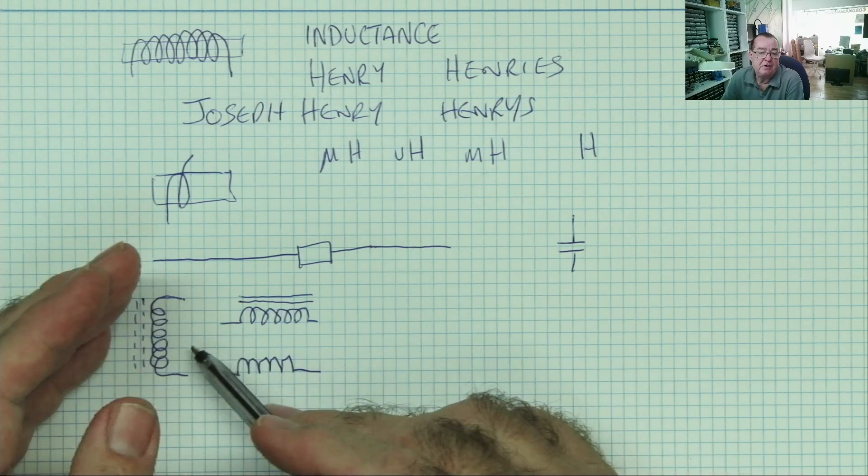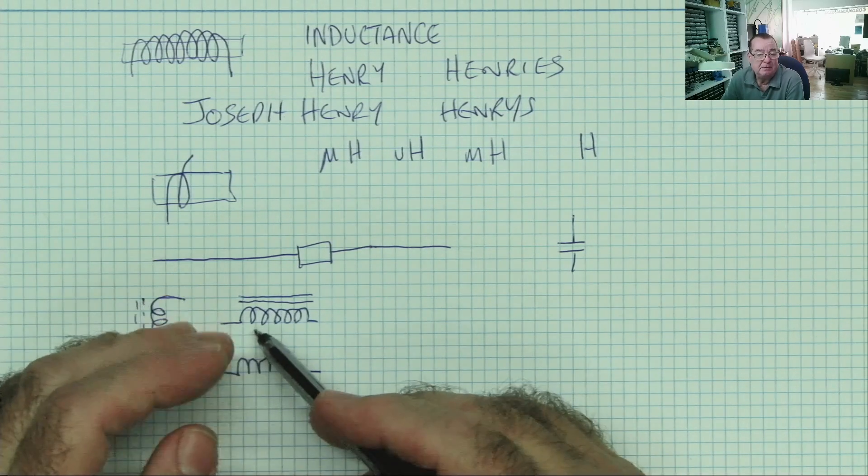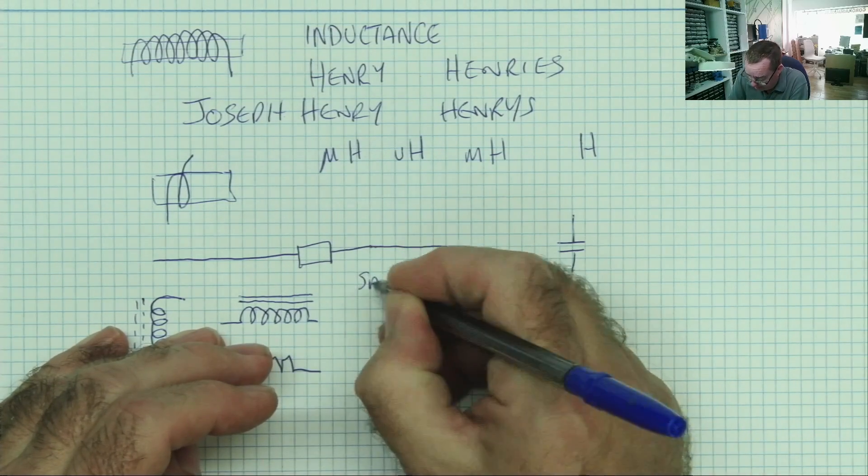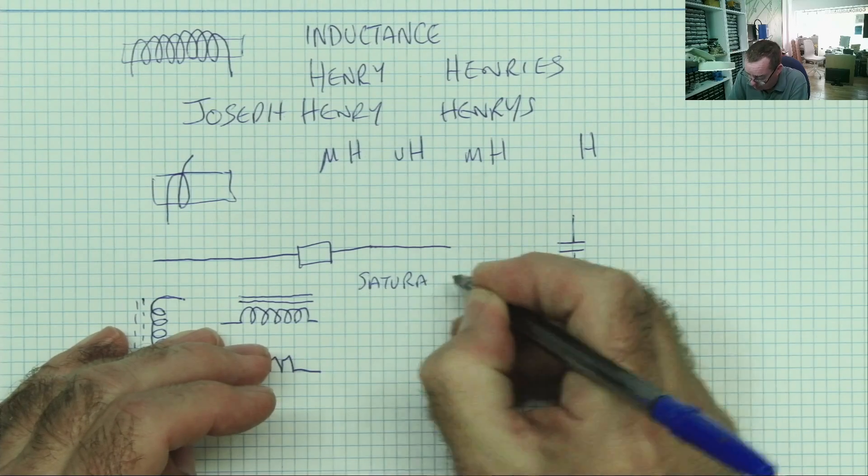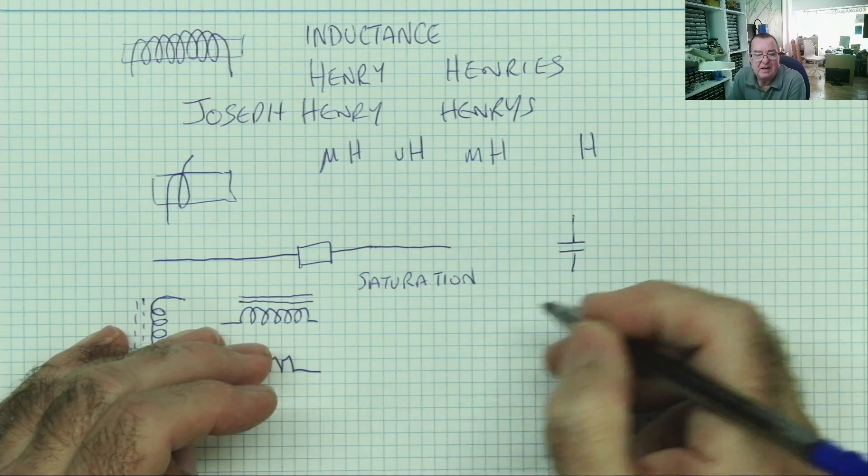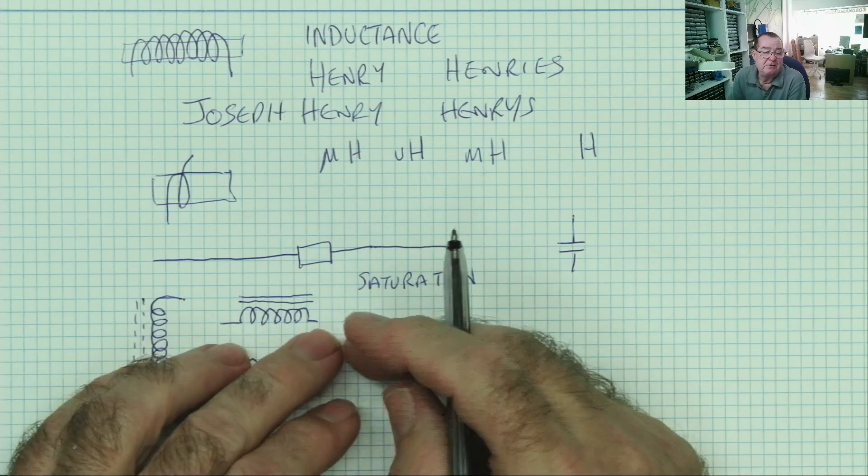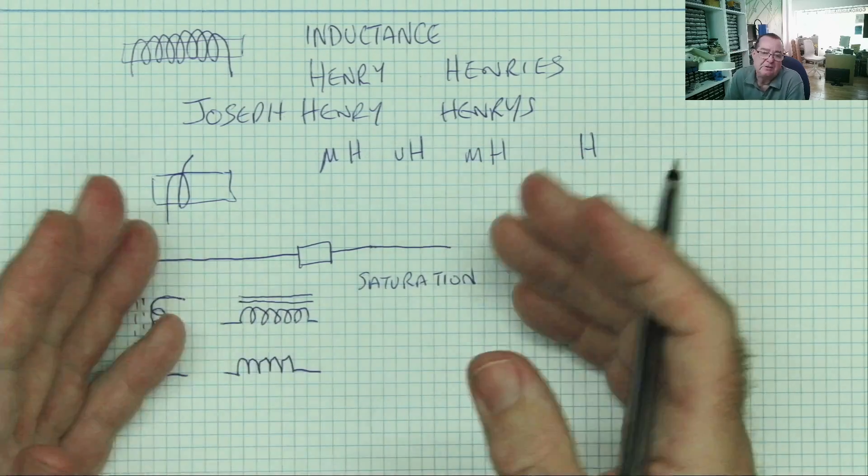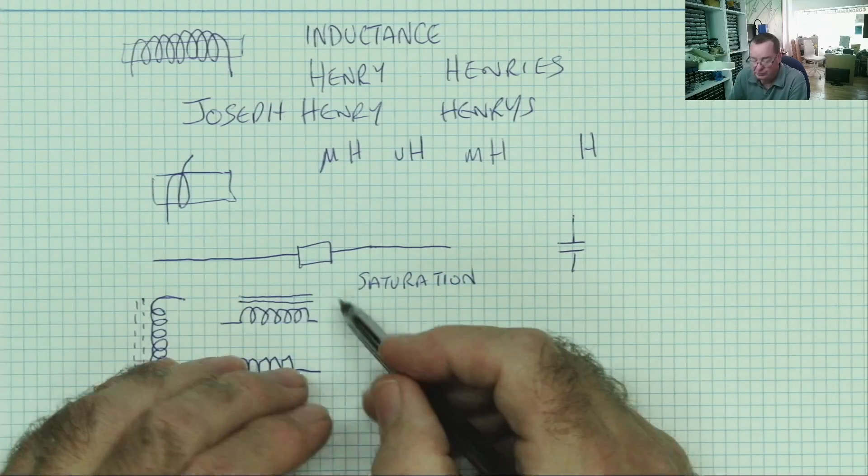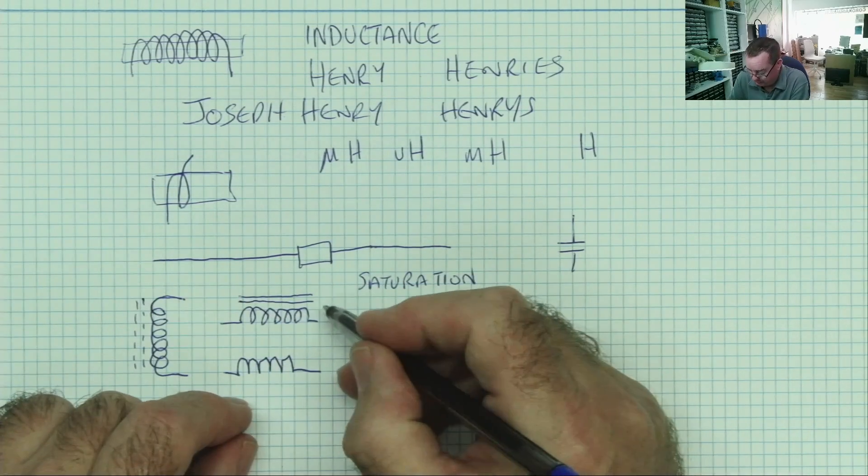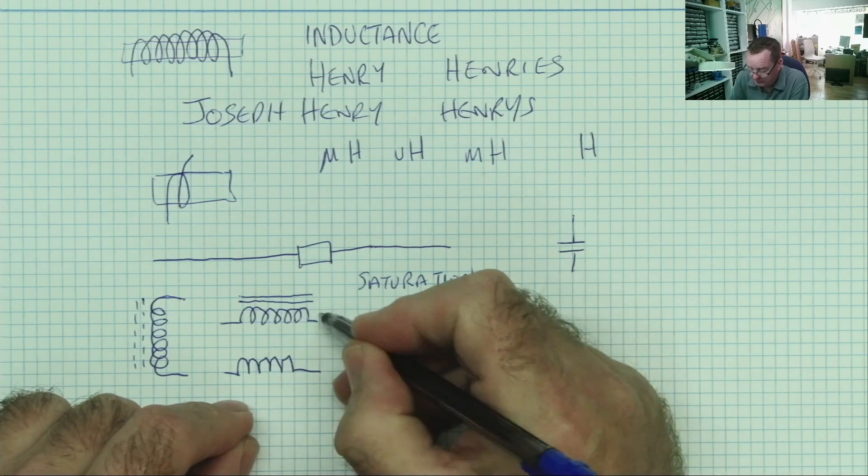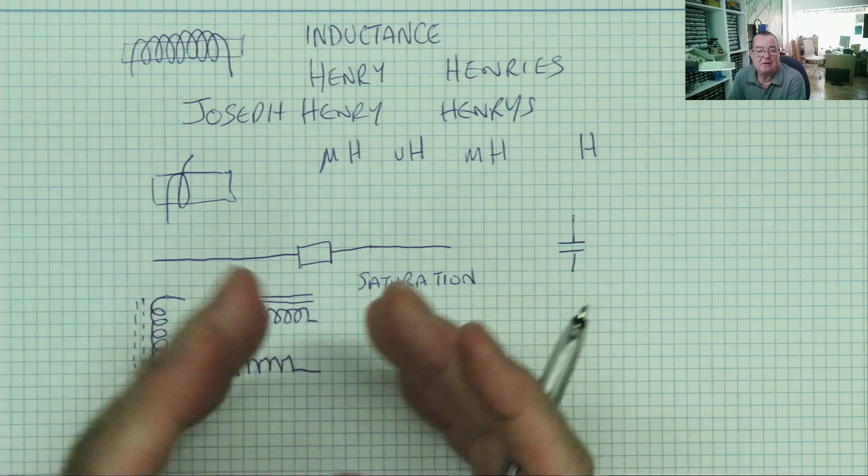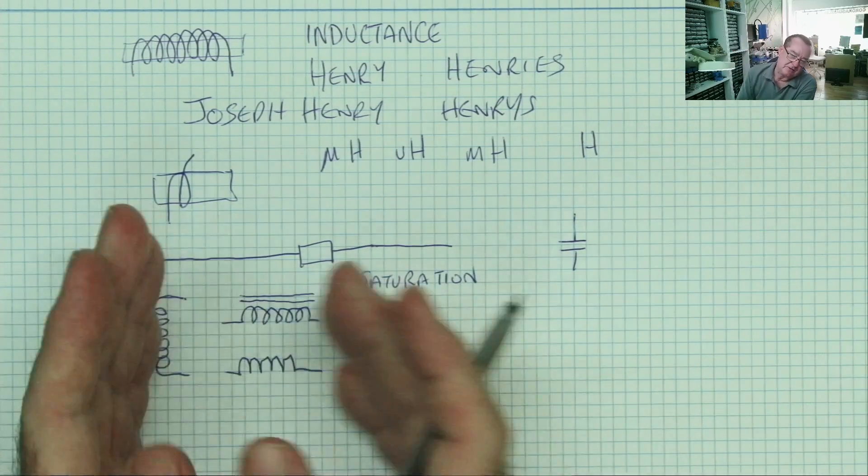So basically, you put current in, the magnetic field increases until it reaches its maximum. This is called saturation, when it can no longer magnetize anymore. And when you stop passing the current through, the magnetic field collapses, and this induces, that's the word induces, inductance induces, current back into the coil. So it converts electricity to magnetism, and from magnetism into electricity.